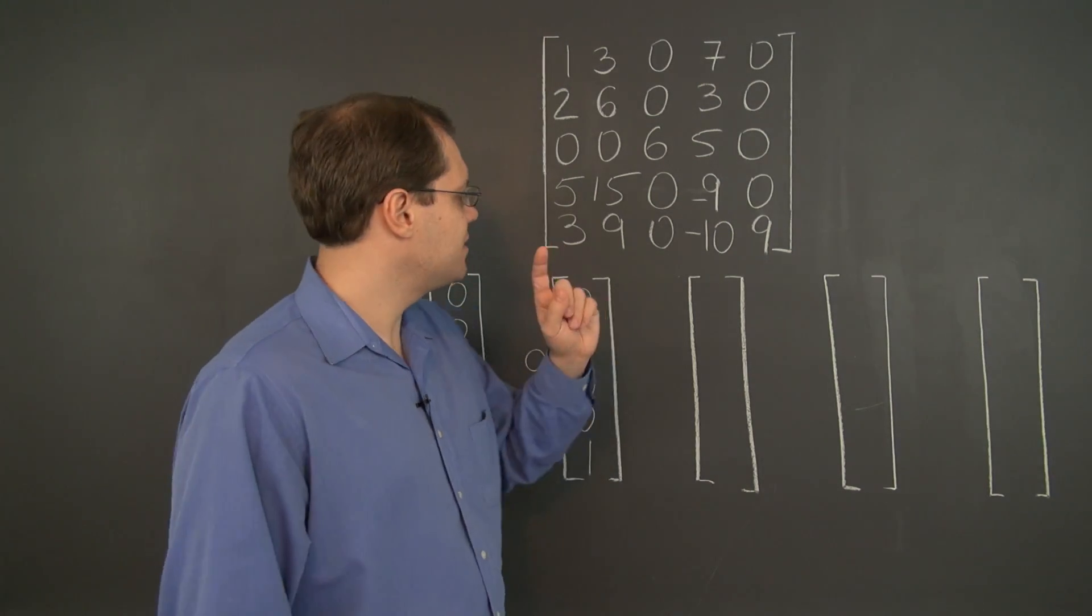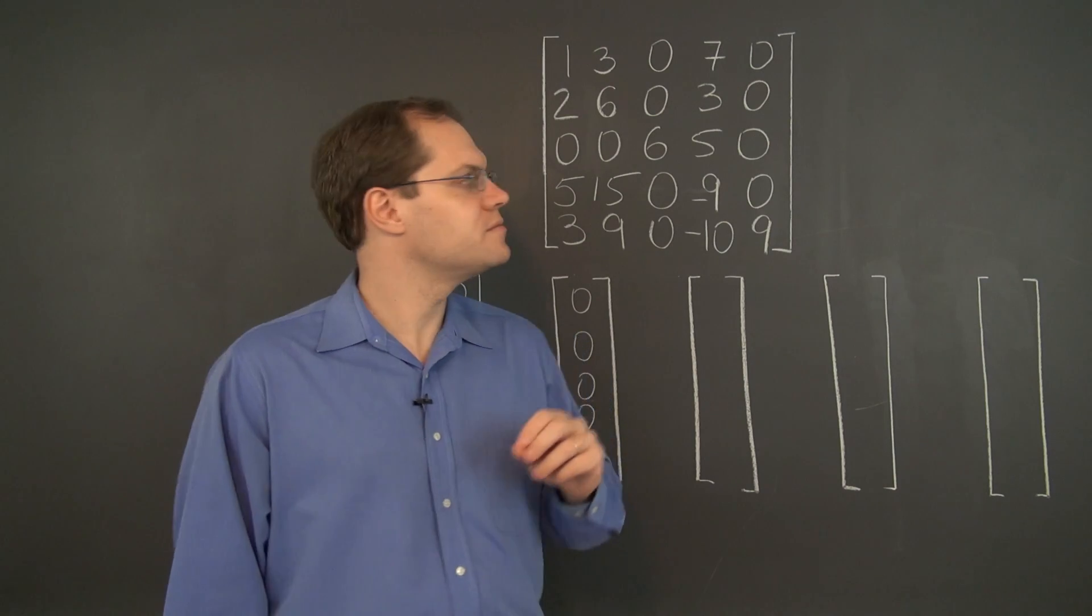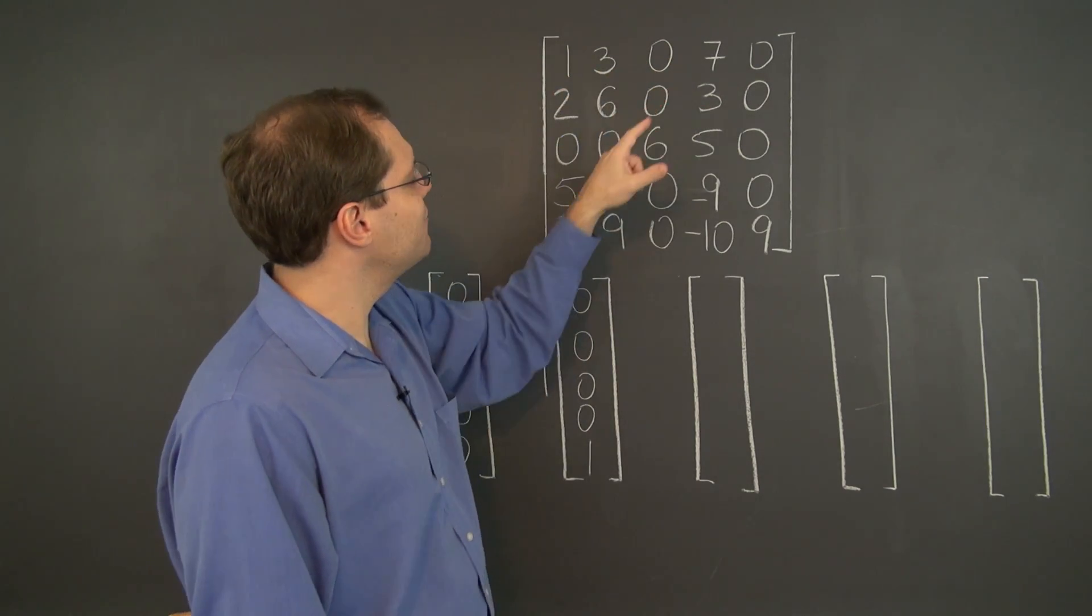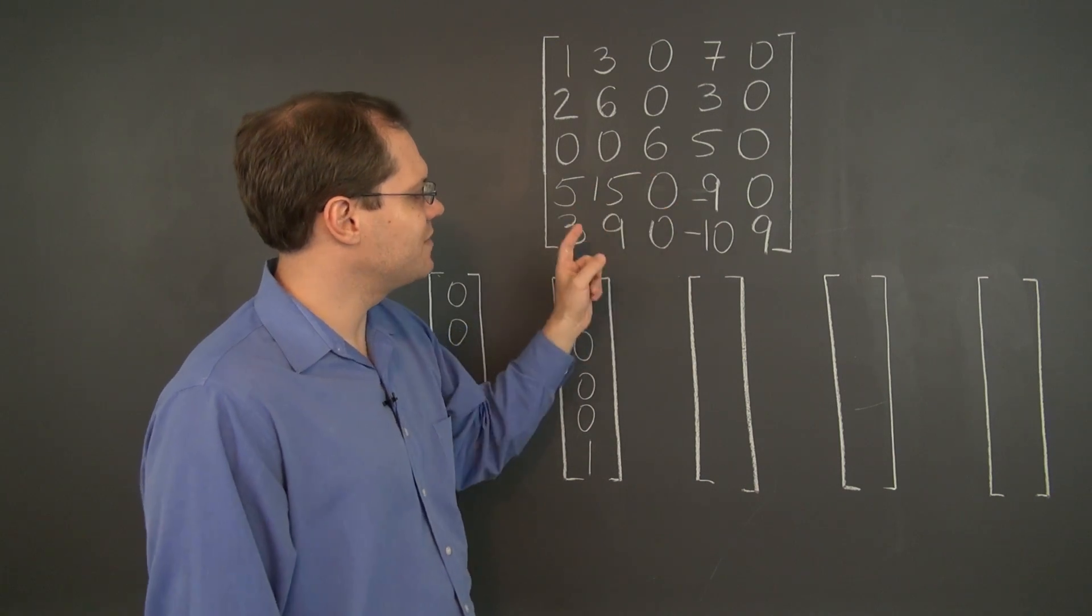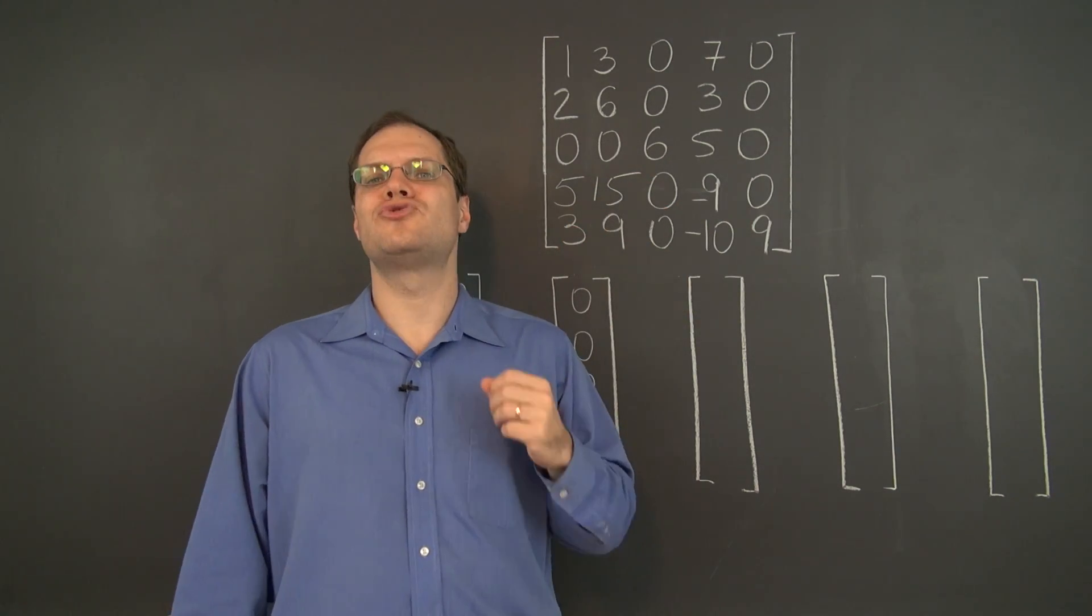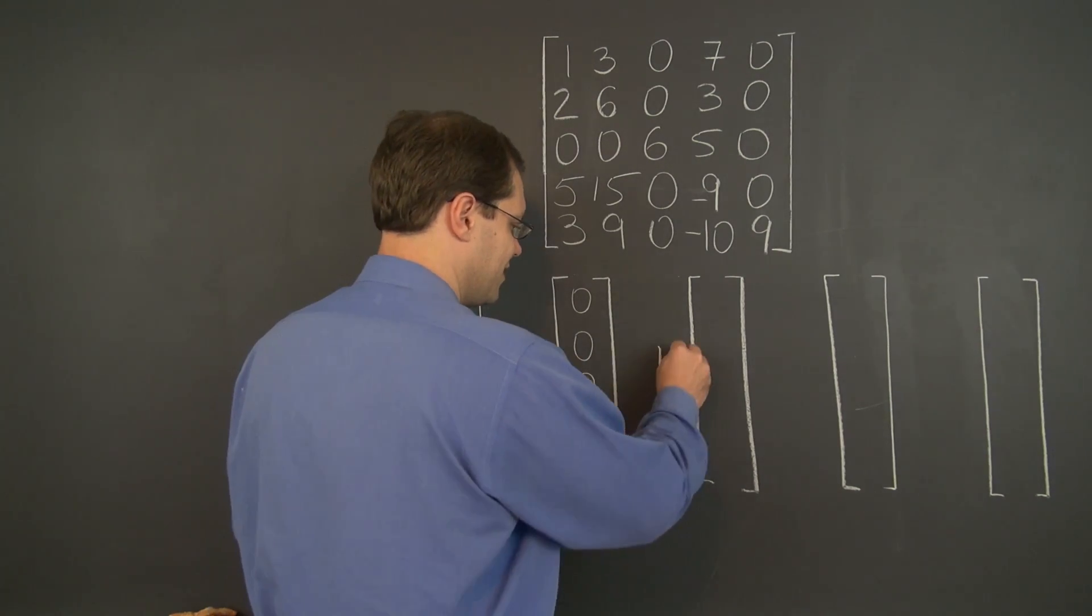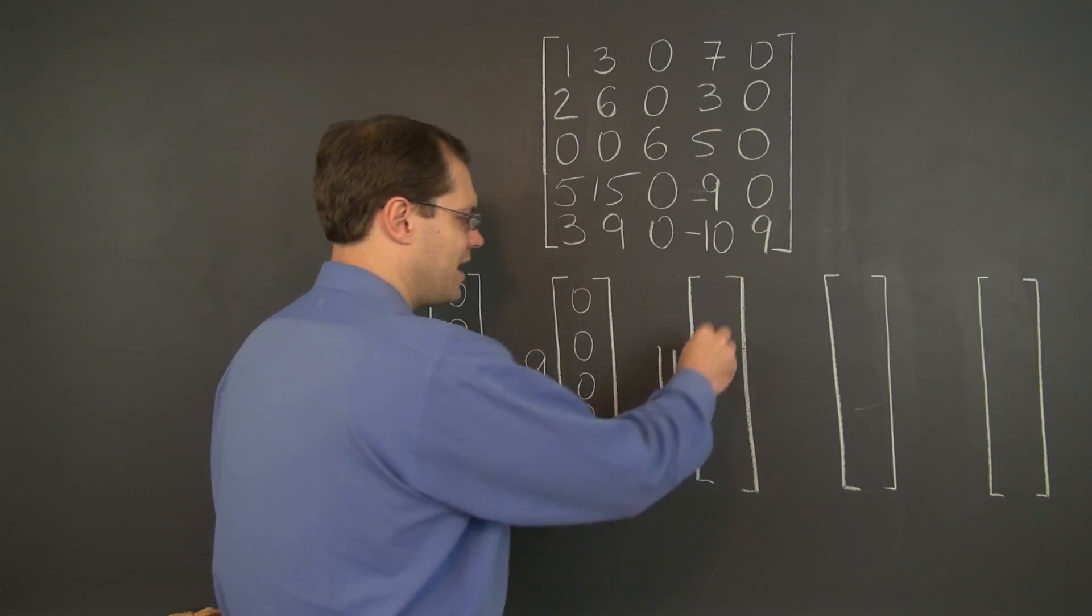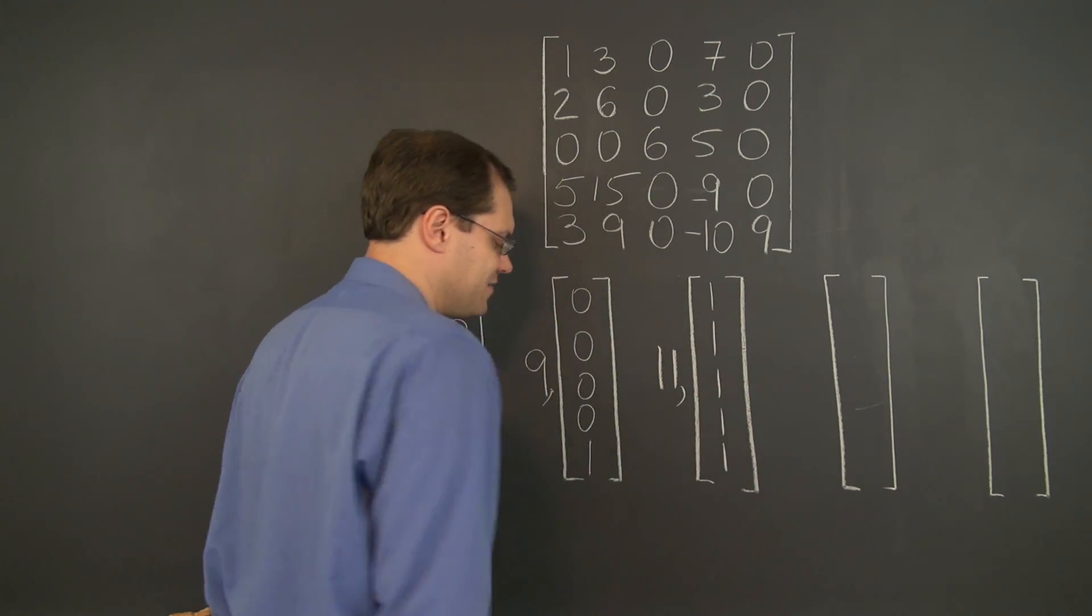Alright, now let's check the sums of rows. We have 11, 11, 11, 11, 11. So each row adds up to 11. So 11 is an eigenvalue and a column of all ones is the corresponding eigenvector.